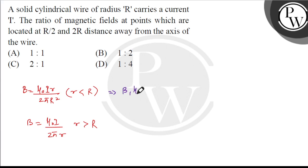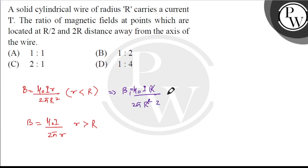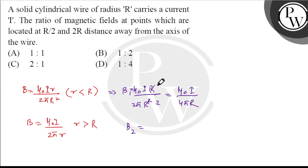For the first case, substituting r = R/2: B₁ = μ₀I(R/2) / 2πR² = μ₀I / 4πR. For the second case, we put r = 2R: B₂ = μ₀I / 2π(2R) = μ₀I / 4πR.